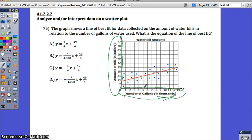We're comparing the number of gallons in thousands to the amount of bills in dollars. So these numbers aren't just 1, 2, 3, 4, they're actually 1,000, 2,000, 3,000. That's going to impact your answer here. The graph shows a line of best fit for data collected on the amount of water bills in relation to the number of gallons of water used. What is the equation of the line of best fit?